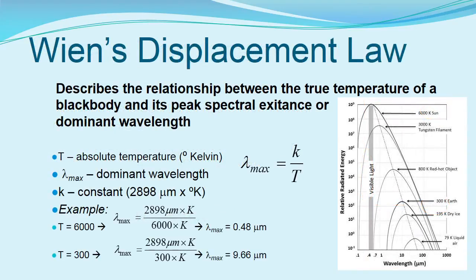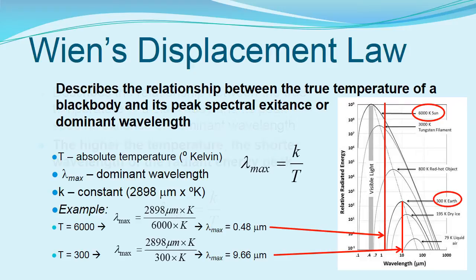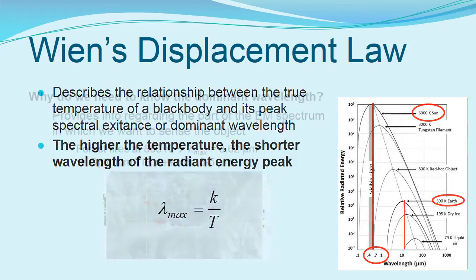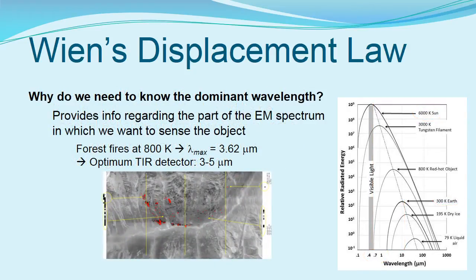Through Wien's displacement law, we see that there is a relationship between the temperature of an object and the dominant wavelength of its emitted energy. The hotter the object, the shorter the dominant wavelength. Note that the dominant wavelength of our very hot sun corresponds to the visible portion of the electromagnetic spectrum — our eyes have evolved to take advantage of the wavelengths associated with the sun's emitted energy. The much cooler earth emits energy in the far infrared wavelengths. With knowledge of the dominant wavelengths associated with different temperatures, we can design sensors to detect and measure the thermal properties of features.